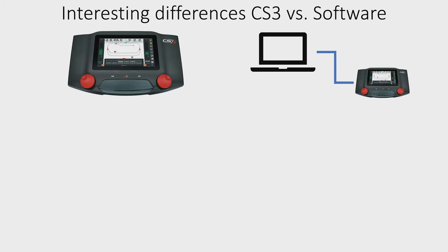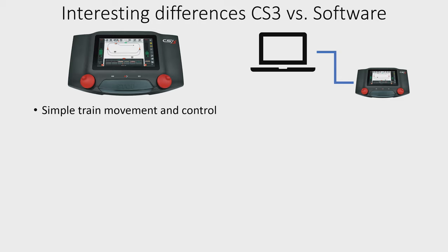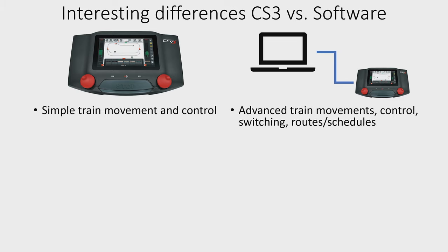You can use the Central Station 3, but there are also many other options, because in essence the Central Station 3 is a very advanced control station. The PC software really only needs something that can send commands to the layout. What the Central Station 3 can do is really simple train movement and control, while most automation software supports very advanced train movements and control.